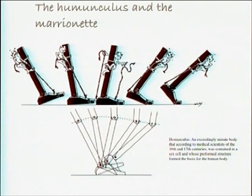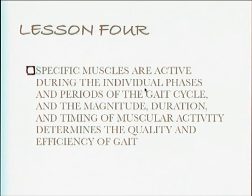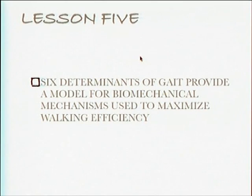There is an interesting cartoon from one of the earliest books in the early 1900s which describes how a puppet pulls a string to move the foot from heel strike to toe off. This is one of the earliest illustrations of the ankle rockers - how the ankle moves through the steps of gait. Specific muscles act in each part of gait, and the magnitude, duration, and timing of muscular activity determines quality and efficiency of gait. There are six determinants: pelvic tilt, pelvic roll, ankle and foot motion, and knee flexion - mechanisms used to optimize the position of your center of gravity so that walking efficiency is maximized.